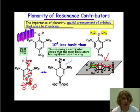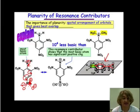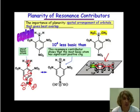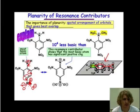This resonance contributor that we draw here in the middle shows that this most basic atom — this nitrogen — has a significant positive charge associated with it. This significant positive charge comes from the fact that we can donate this lone pair into this pi system. But this is our most basic atom, and if our basic atom has a positive charge, it doesn't make it very basic at all.